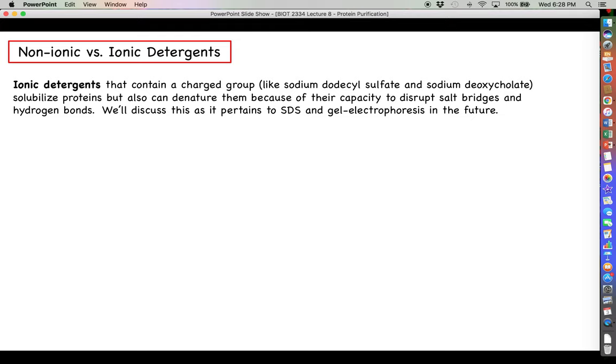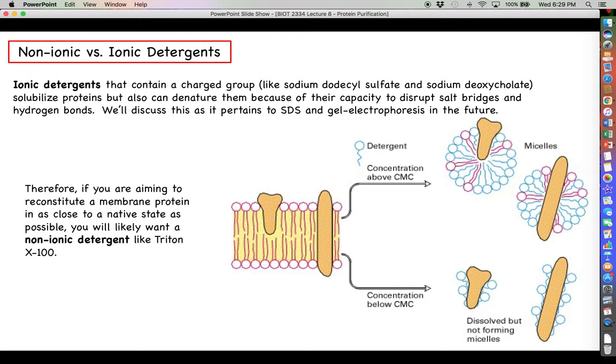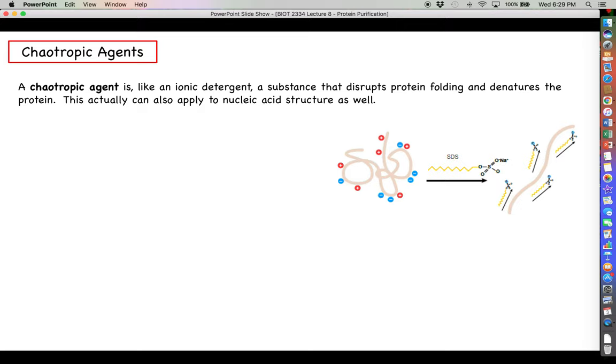We'll talk about ionic detergents much later in the semester when we really get into gel electrophoresis and SDS-PAGE and those sorts of things. But truly, if you are trying to purify a protein and then also be able to assay its function later, you're probably going to want a non-ionic detergent, something like Triton X-100. Because non-ionic detergents do not have that charged functional group, they do not run the risk of disrupting all those intramolecular forces that we talked about within the folded protein itself. So you can truly just reconstitute the membrane protein in micelles and then leave it at that. You can hopefully maintain the folded structural integrity of the protein and just pull it out of the membrane itself.